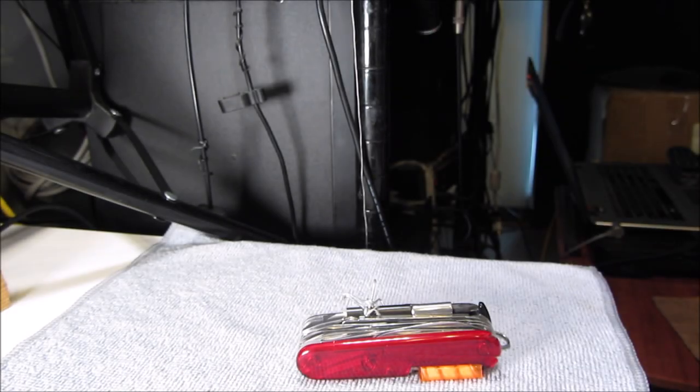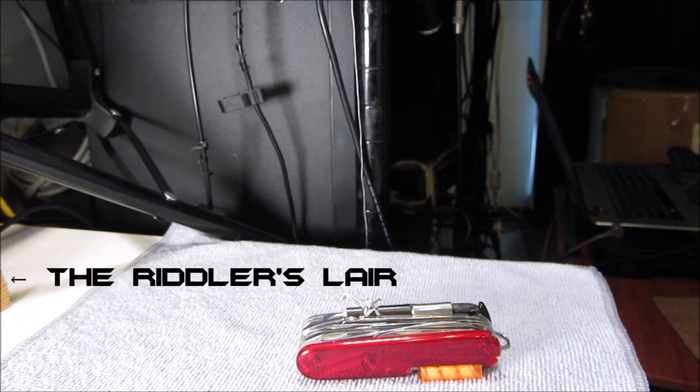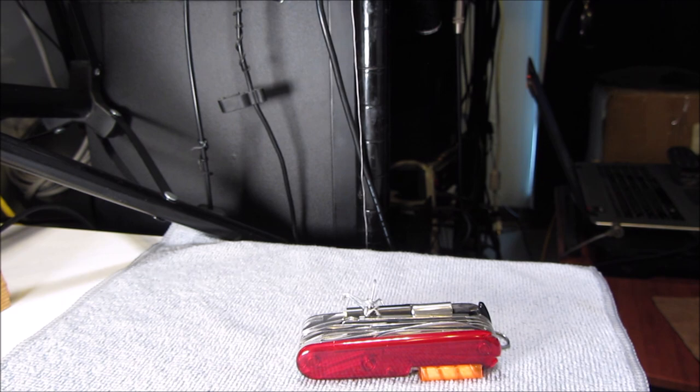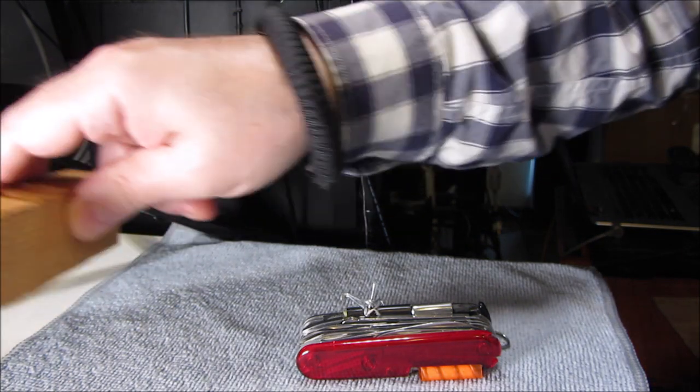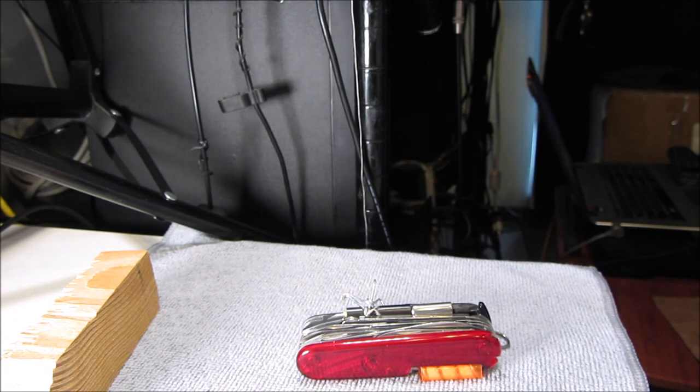So how many times has this happened to you? You're on a spy mission, you sneak up to the bad guy's palace which you have to infiltrate, and all of a sudden you realize there's a wall you have to scale. Luckily, you have your grappling hook on your Swiss Army knife, and here's how you deploy it.